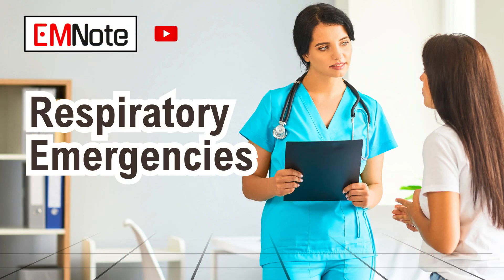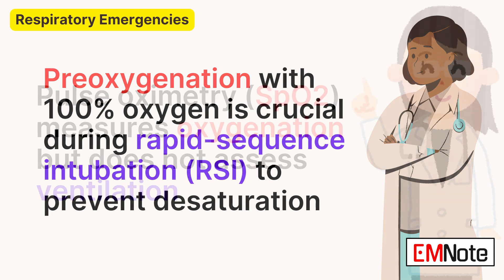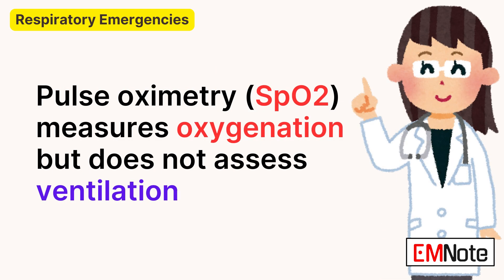Respiratory Emergencies. Pre-oxygenation with 100% oxygen is crucial during rapid-sequence intubation to prevent desaturation. Pulse oximetry measures oxygenation, but does not assess ventilation.